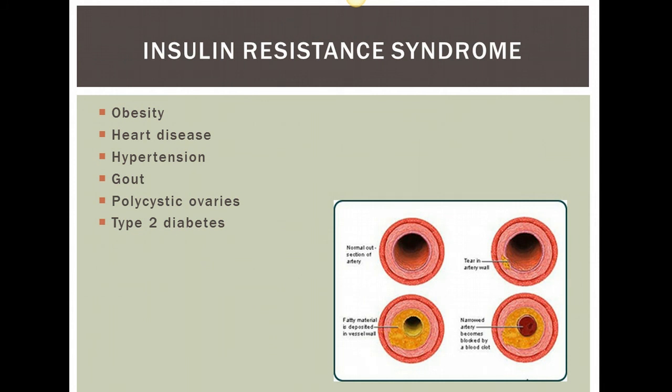With insulin-resistant syndrome, this is a complex disorder with relating symptoms. The comorbidities listed — obesity, heart disease, hypertension, gout, and polycystic ovaries — have a common link of increasing the risk of diabetes mellitus and heart disease. Insulin-resistant syndrome is also often referred to as metabolic syndrome.